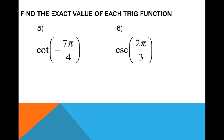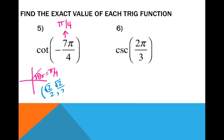Cotangent of negative 7 pi over 4. Change to a positive coterminal angle: negative 7 fourths plus 2 gives pi over 4, which is in the first quadrant, so the reference angle is pi over 4. Pi over 4 is your middle finger, so I put that down. My ordered pair is root 2 over 2, comma, root 2 over 2. Cotangent is x over y, so root 2 over 2 over root 2 over 2 equals 1. You can verify in the calculator using 1 divided by tangent of negative 7 pi over 4, which gives 1.